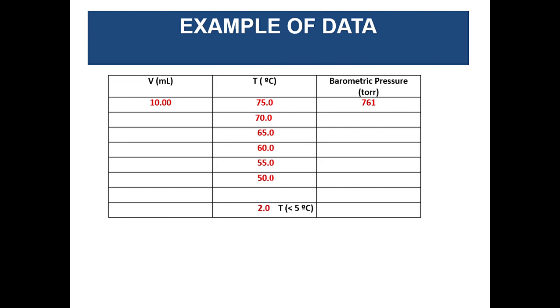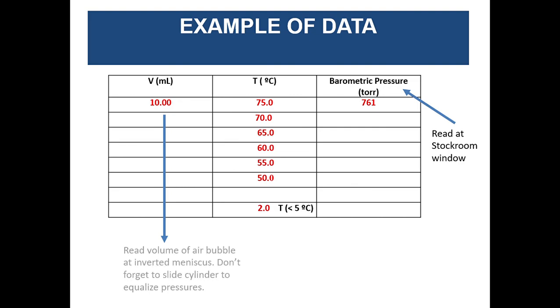Your data of course is going to consist of several things. Don't forget to go by the stock room window and check the barometer for the barometric pressure on that day. Make sure that you are reading your volumes of your air bubbles at different temperatures. Remember you always read it at the inverted meniscus and don't forget to slide the cylinder to make sure the pressure is equalized. You always have to take this volume reading at a pressure where the pressure inside the graduate cylinder is the same as the outside. After you reach the 50 degree celsius mark remember after that is when you're going to add ice so you're going to remove about half of the water in the beaker, replace it with ice and maybe more water and take your final reading somewhere around two degrees celsius. As long as it's under five degrees celsius it should be fine.